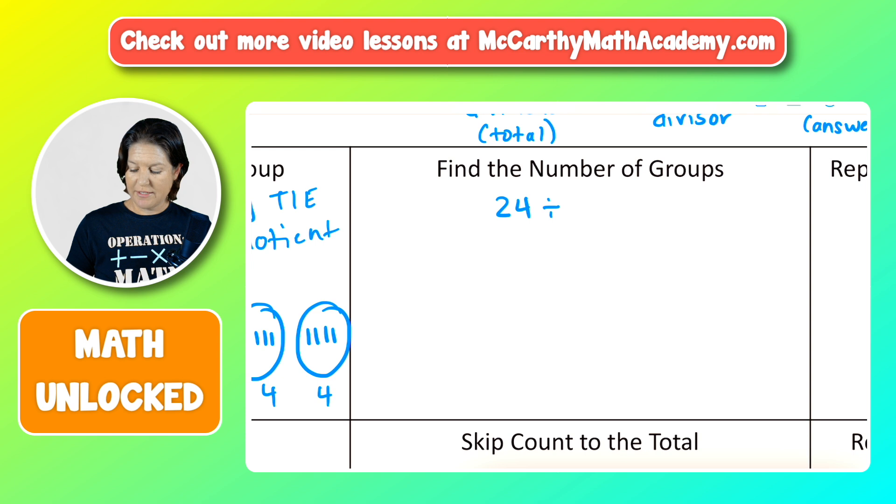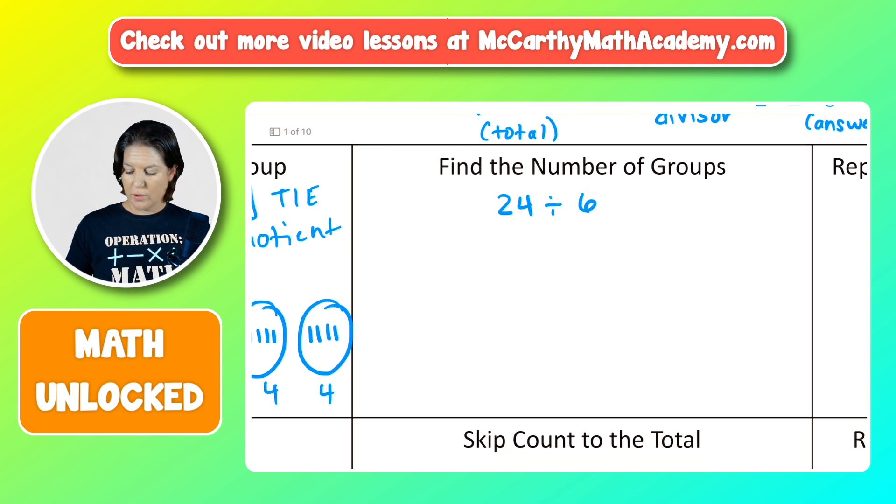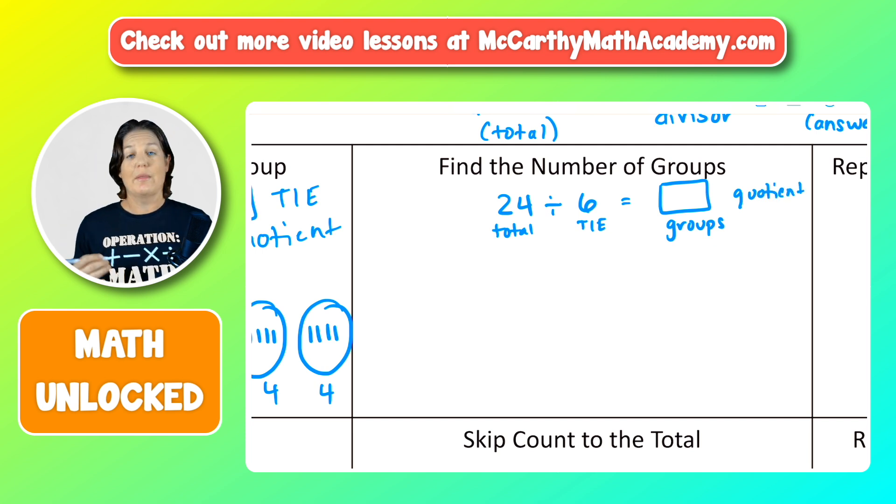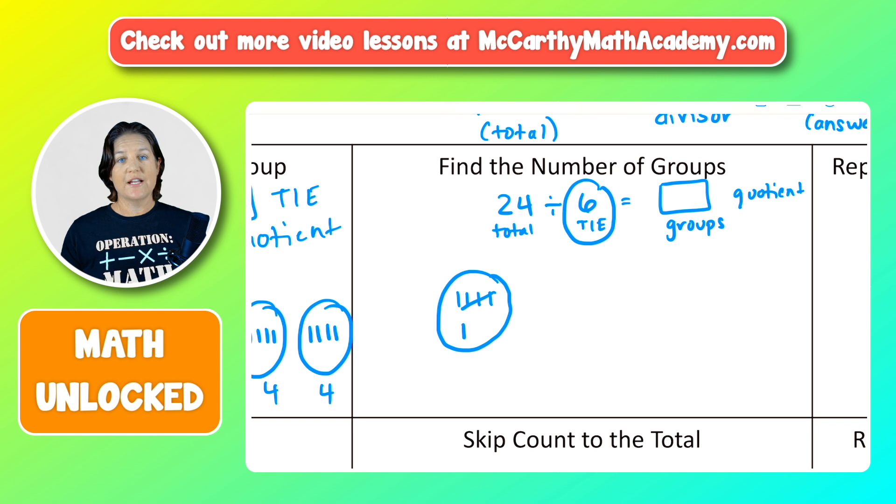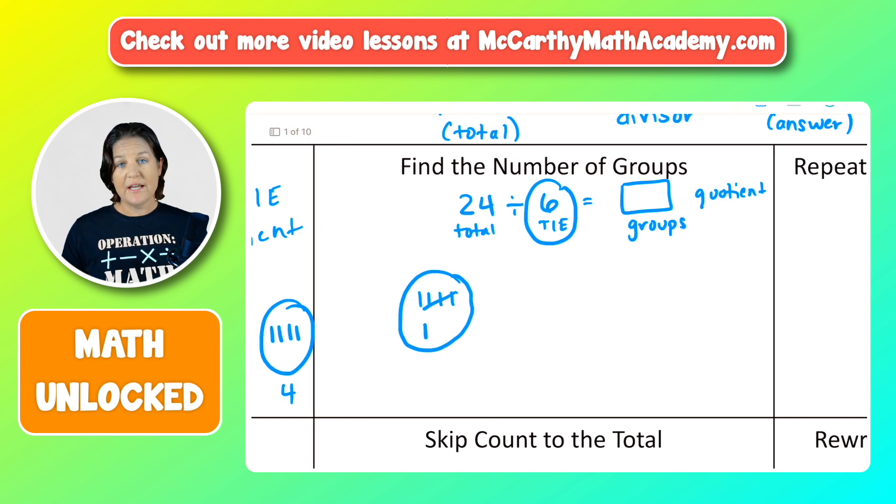Now let's take 24 and this time find the number of groups. So we're saying 24 total divided by six things in each. And this time we're trying to find the number of groups, which is again our quotient. That's the answer to a division problem. So we have six in each. So now watch how this strategy is a little bit different. So we're trying to find the number of groups. So one, two, three, four, five, six. That's a group.